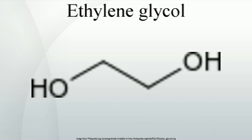Ethylene glycol is used as a protecting group for carbonyl groups in organic synthesis. Treating a ketone or aldehyde with ethylene glycol in the presence of an acid catalyst, e.g., p-toluenesulfonic acid, gives the corresponding 1,3-dioxolane, which is resistant to bases and other nucleophiles. The 1,3-dioxolane protecting group can thereafter be removed by further acid hydrolysis. In this example, isophorone was protected using ethylene glycol with p-toluenesulfonic acid in moderate yield, and water was removed by azeotropic distillation to shift the equilibrium to the right.